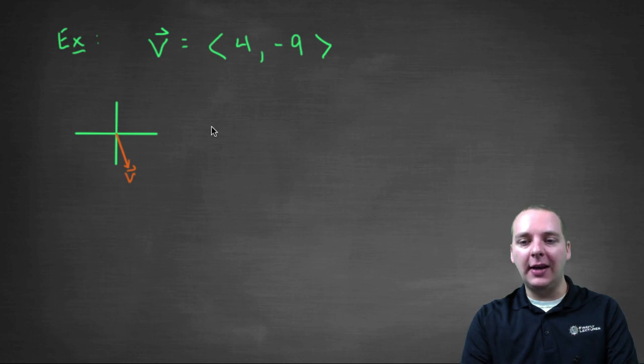So how would you find a vector that's much shorter than this guy, that goes in the same direction as V?